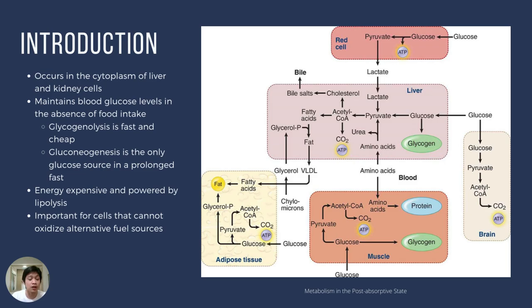Glycogenolysis is the breakdown of the storage form of glucose, which is glycogen, in the liver. Glycogen is slowly degraded and glucose is liberated into the blood. But our body has a finite store of glycogen. The liver can only hold up to as much as 100 grams of glycogen — some resources say only 60 grams. This amount of glycogen is degraded within approximately 11 to 24 hours.